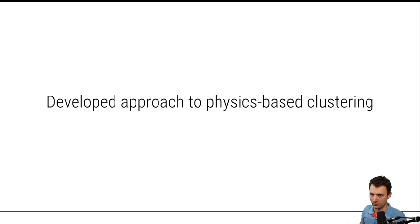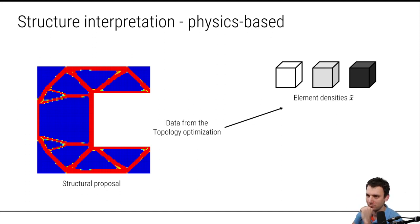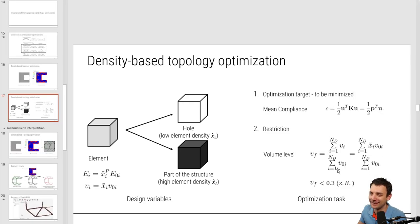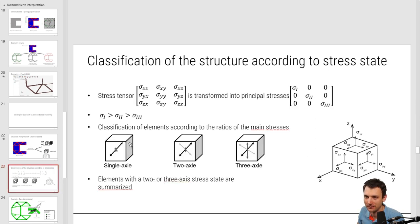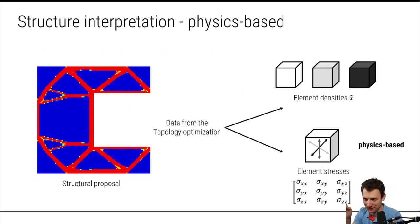What I did was the physics-based clustering approach. What data do we have available for this separation? We have the element densities — pretty obvious — but we also have element stresses. That's what makes it physics-based. A stress tensor, which you may have seen in textbooks, can be transformed into the principal stresses. You can classify your elements by the relations of the principal stresses to each other — I care about uniaxial versus multi-axial stress states, because this allows me to differentiate between beam or rod elements and linkage elements.